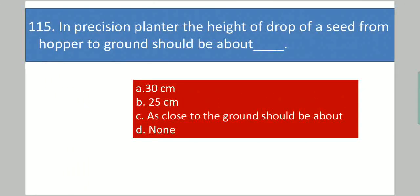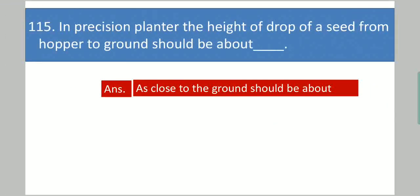Next question: In a precision planter, the height of drop of a seed from upper to ground should be about dash. Your options are: 30 cm, 25 cm, as close to the ground as possible, or none. Your answer is as close to the ground as possible.